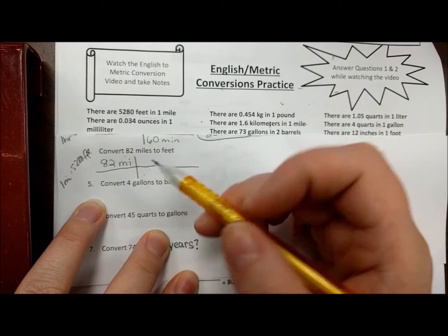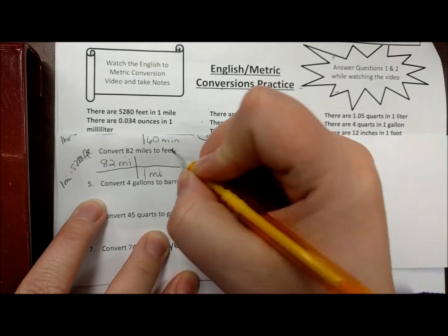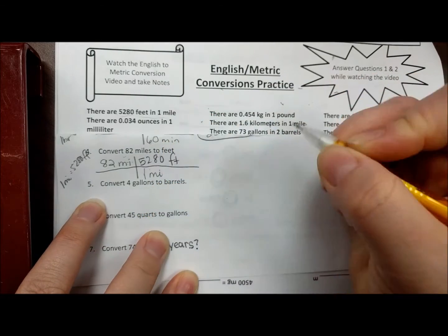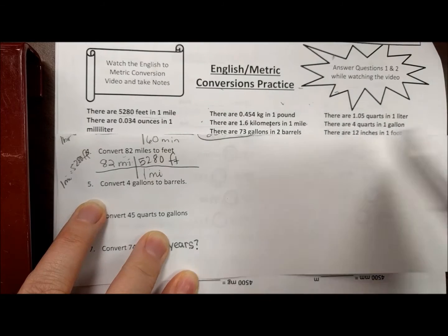Your diagonals are always going to match, so diagonally I need one mile, and that means the 5280 feet go on top. I'm going to calculate that.